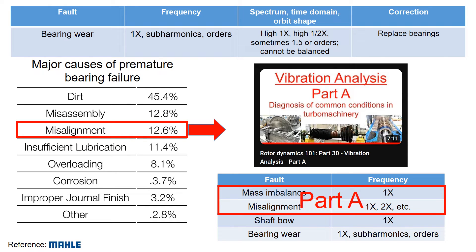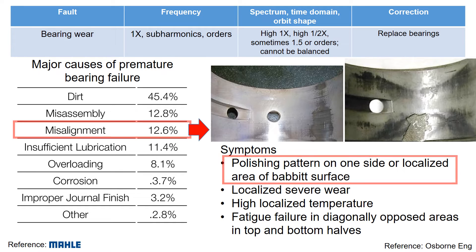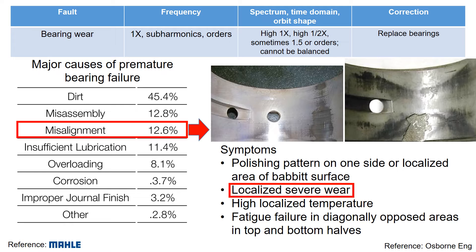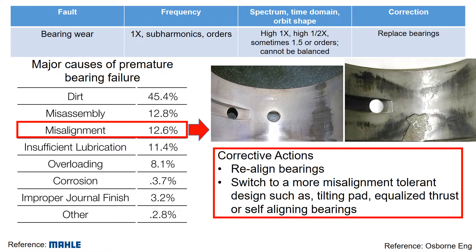Misalignment also affects premature bearing failure, and the vibration analysis part 1 video covers topics related to misalignment. If you examine bearing wear due to misalignment, the symptoms are a polishing pattern on one side or localized area of the BABBIT surface, localized severe wear, high localized temperature, and fatigue failure in diagonally opposed areas in top and bottom halves. The corrective actions involve realigning bearings or adopting misalignment tolerant designs.